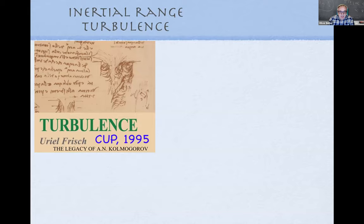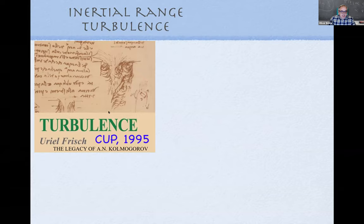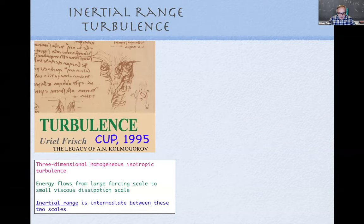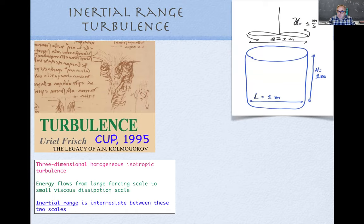I always use this slide when I give any talk about turbulence. It's so important to have a clear physical understanding of what we mean by the inertial range, because that's what our theories are typically based on. Here is the standard textbook by Frisch on turbulence — the da Vinci drawings, the legacy of Kolmogorov. This is the simplest case of three-dimensional homogeneous isotropic turbulence, where energy flows from the large forcing scale to the small viscous dissipation scale, and the inertial range is somewhere in between.